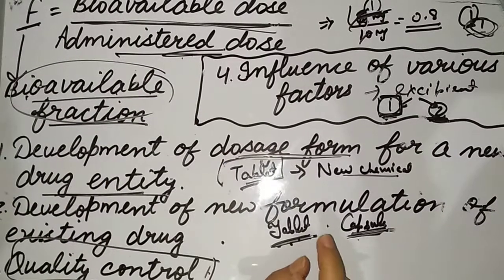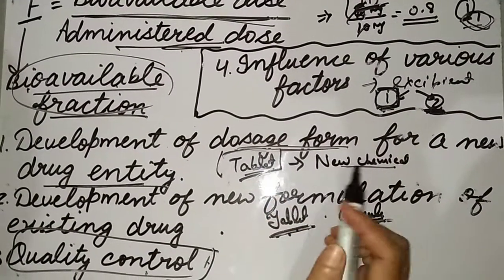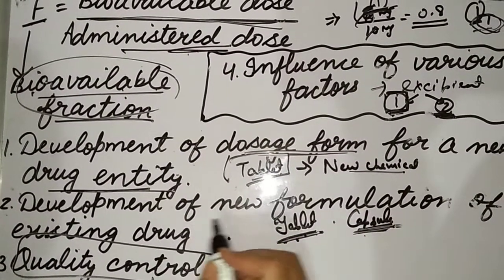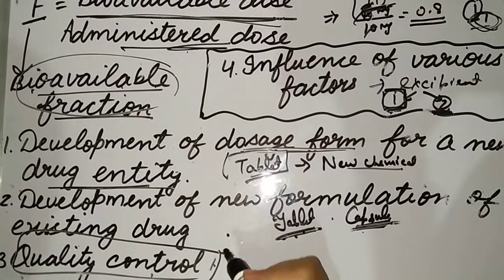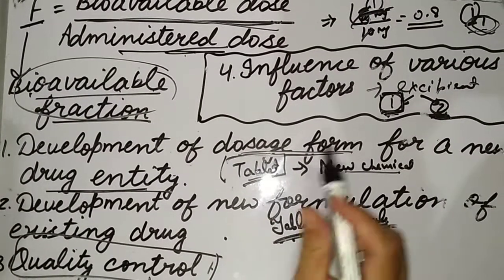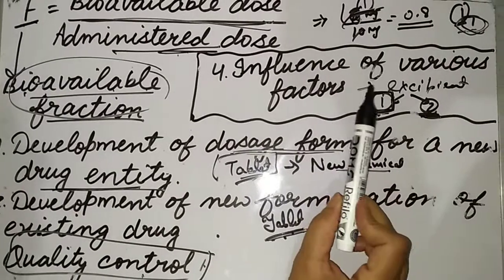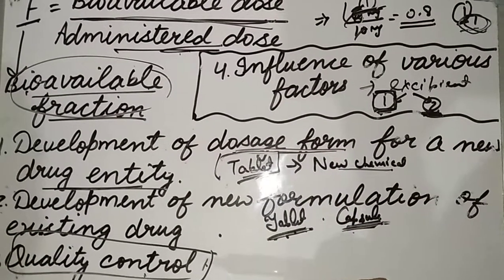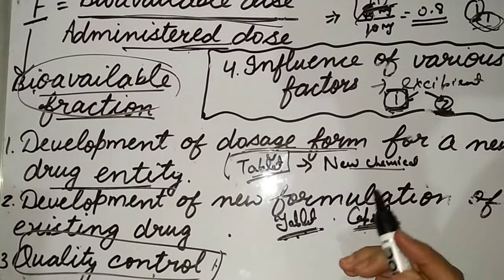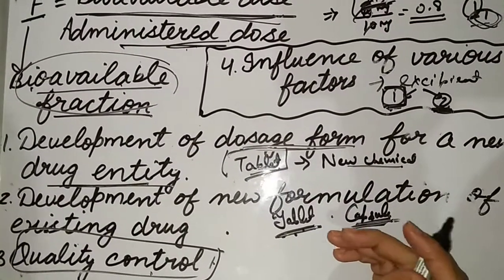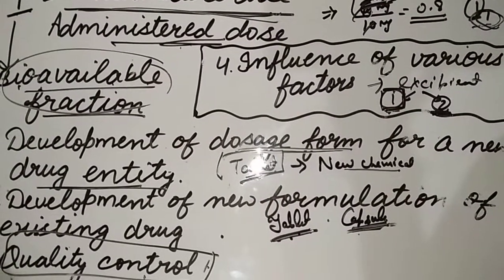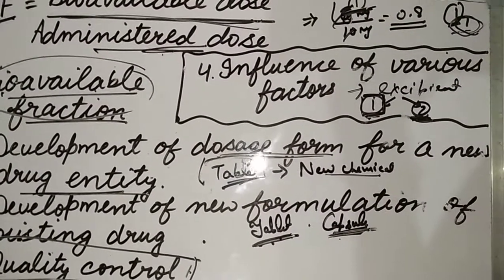So there are four objectives for which bioavailability studies are considered: first, development of a dosage form for a new drug entity; second, development of a new formulation of an existing drug; third, for quality control purposes; and fourth, for determining the influence of various factors such as excipients and patient-related factors. We will go through further material related to bioavailability. Thank you, students.